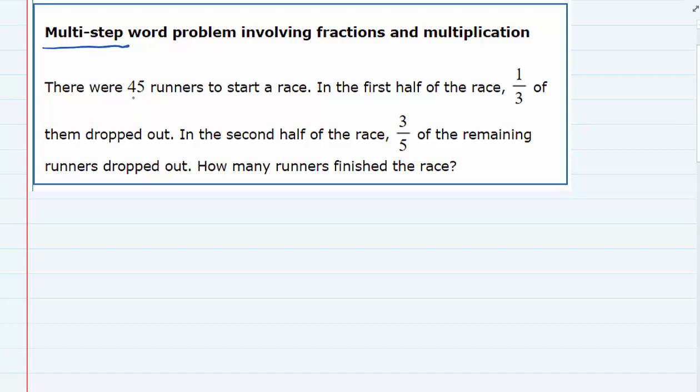Starting off here, we're told there are 45 runners to start. But one-third of them drop out in the first half. So let's start with that. 45, that's how many we start with.